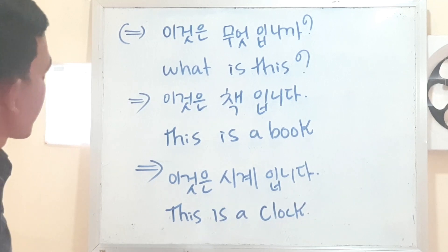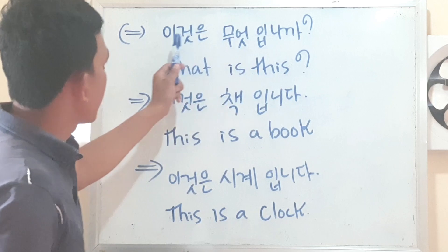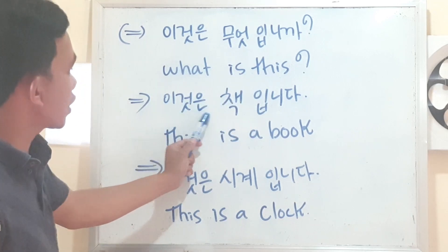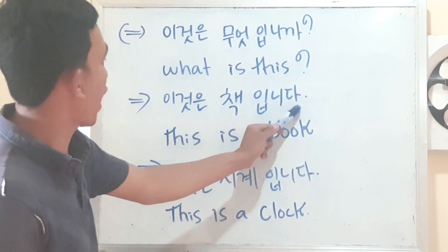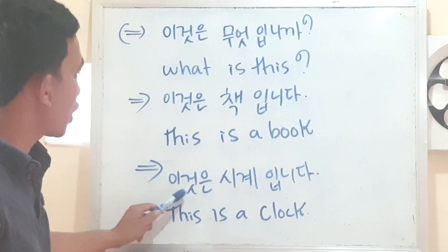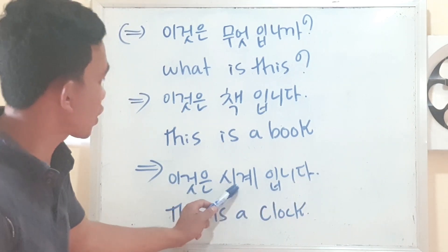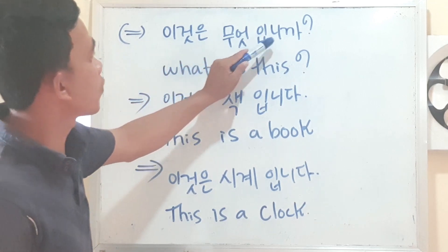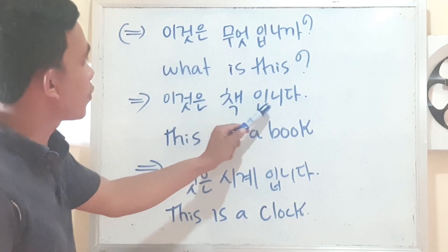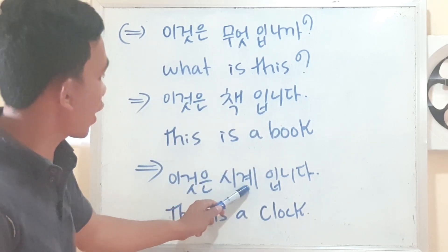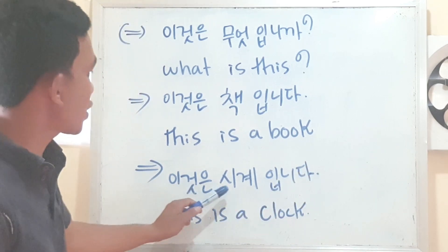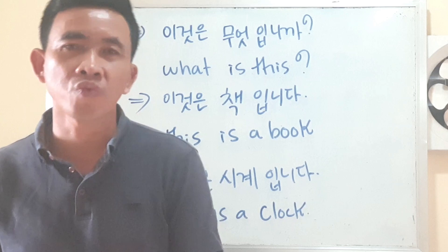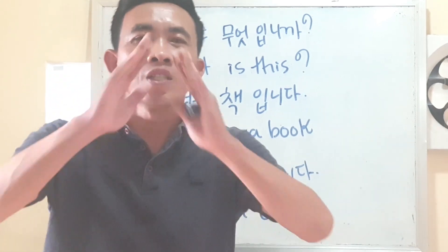Like this, okay. The question 이것은 뭐예요 means 'what is this,' and then 이것은 책이에요다 means 'this is a book.' 이것은 시계이에요다 means 'this is a clock.' Like this, right? Can you read? Thank you. I hope you can read without me. Thank you so much. Did you take the time to learn Korean language with me today? Hope to see you in the next video. Thank you so much, bye bye.